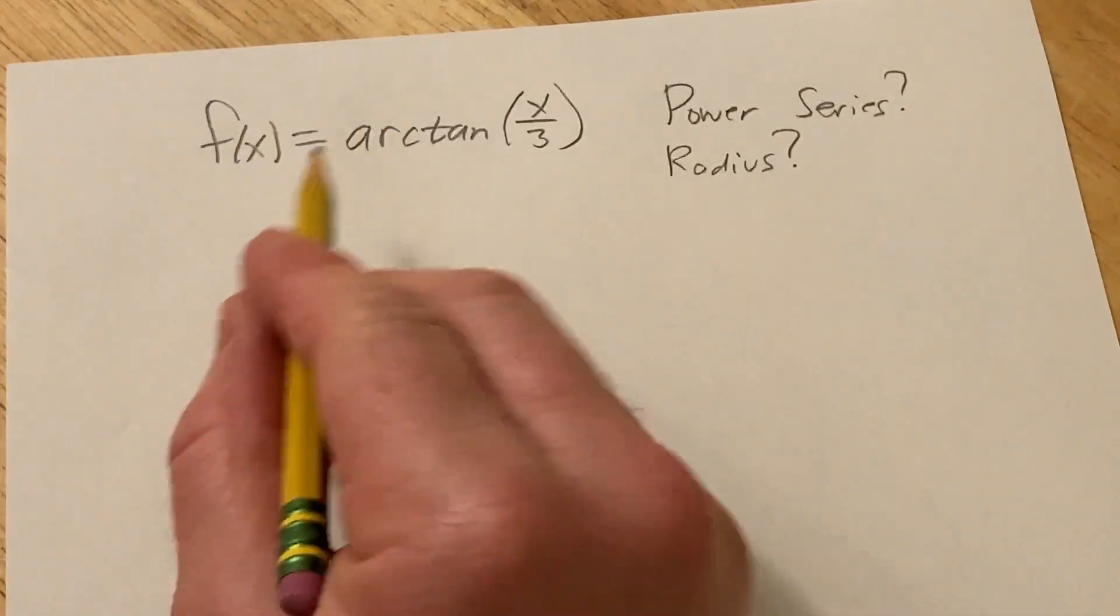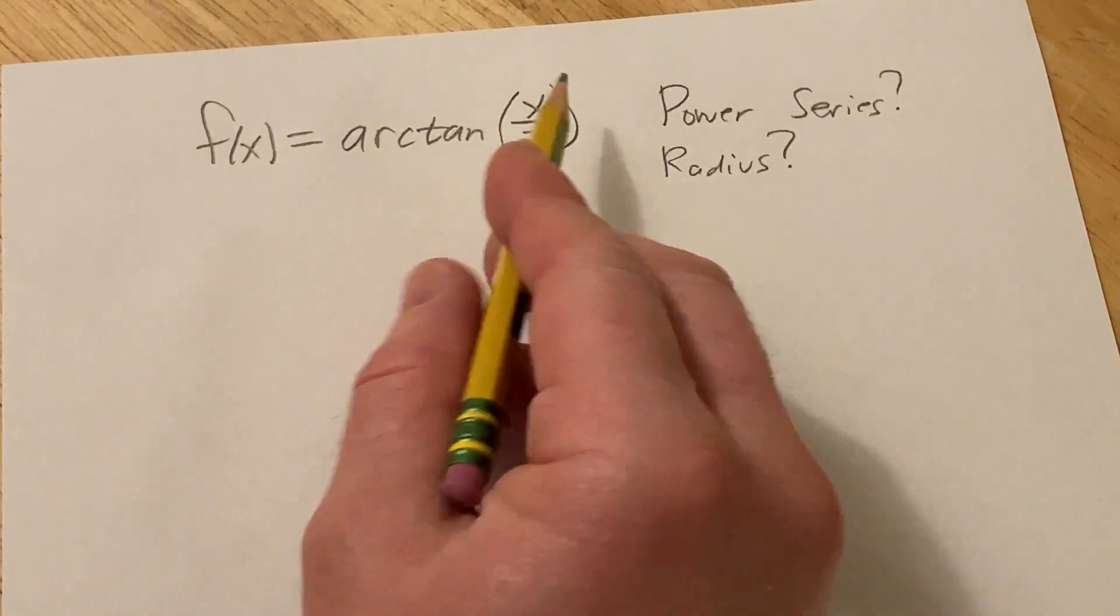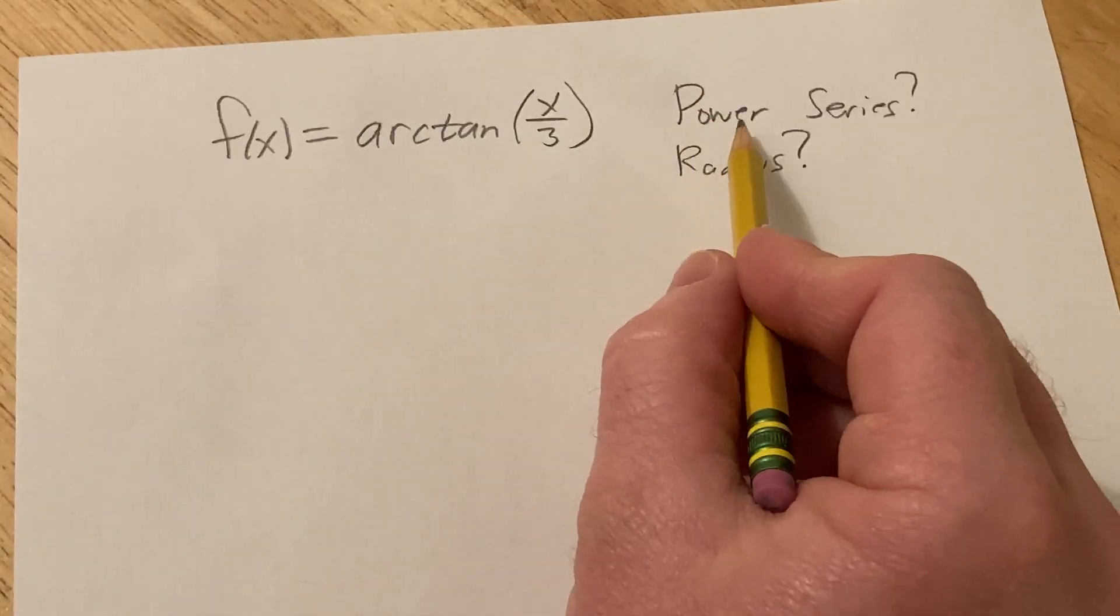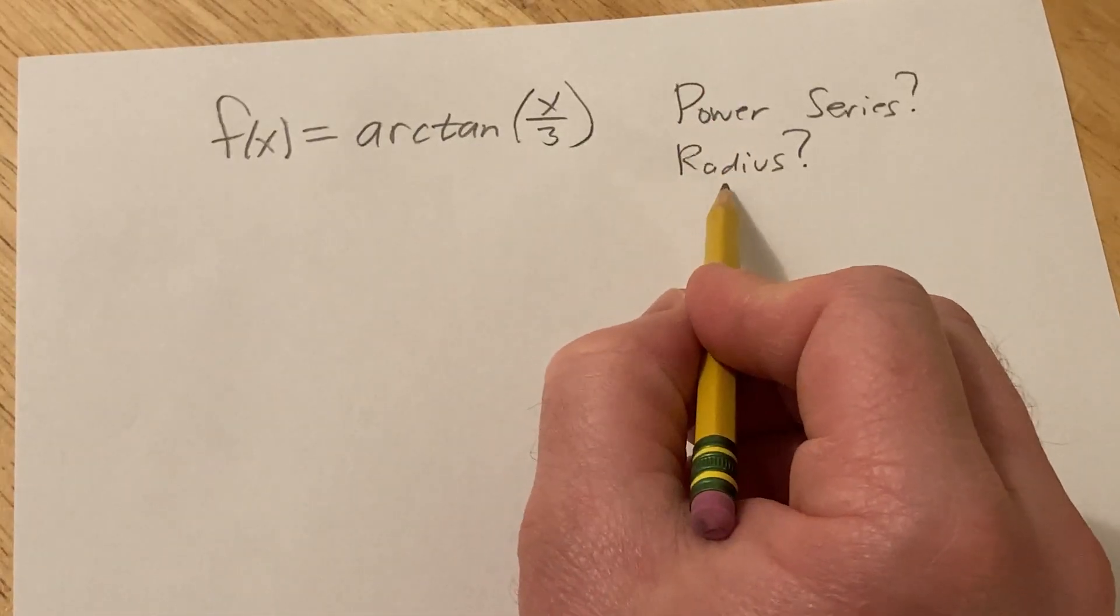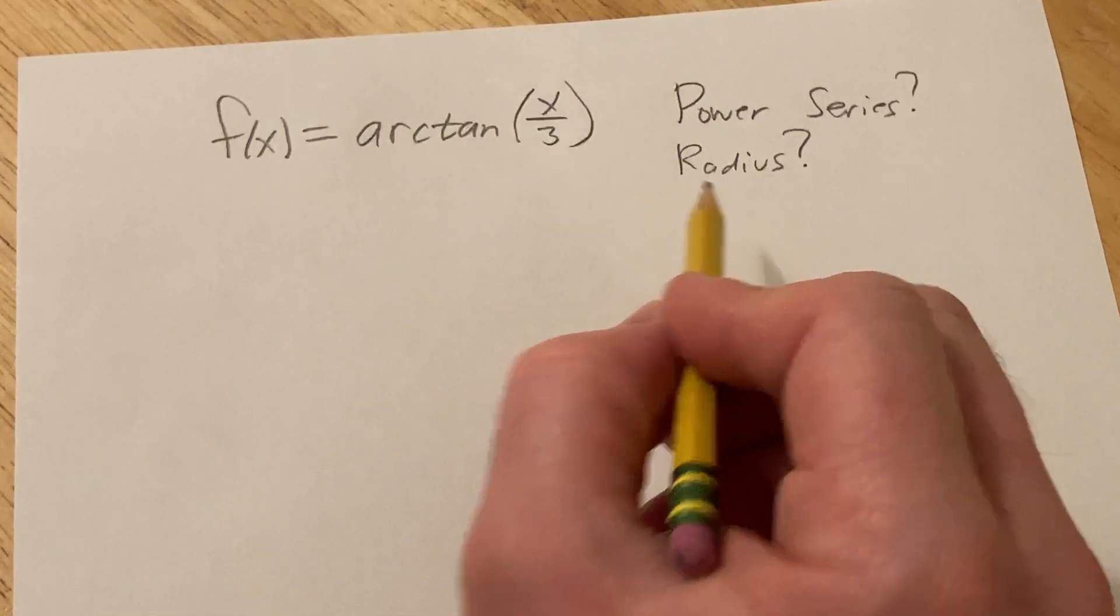Hi, in this problem we have a function f of x equal to the arctangent of x over 3 and we want to find a power series for this function and we want to find the radius of convergence.